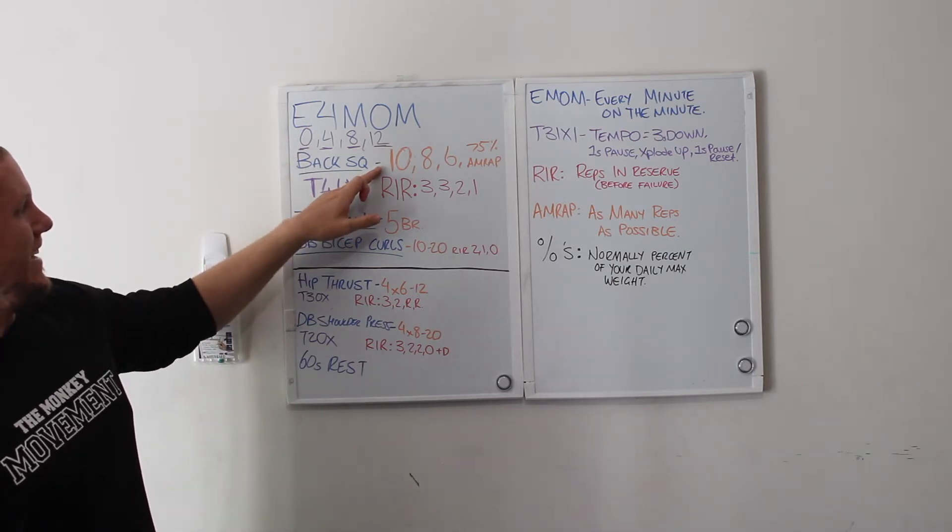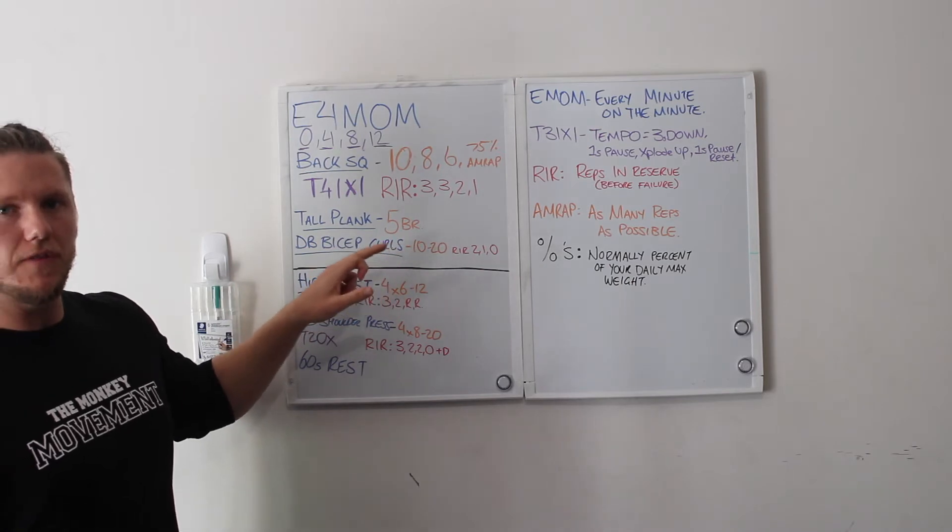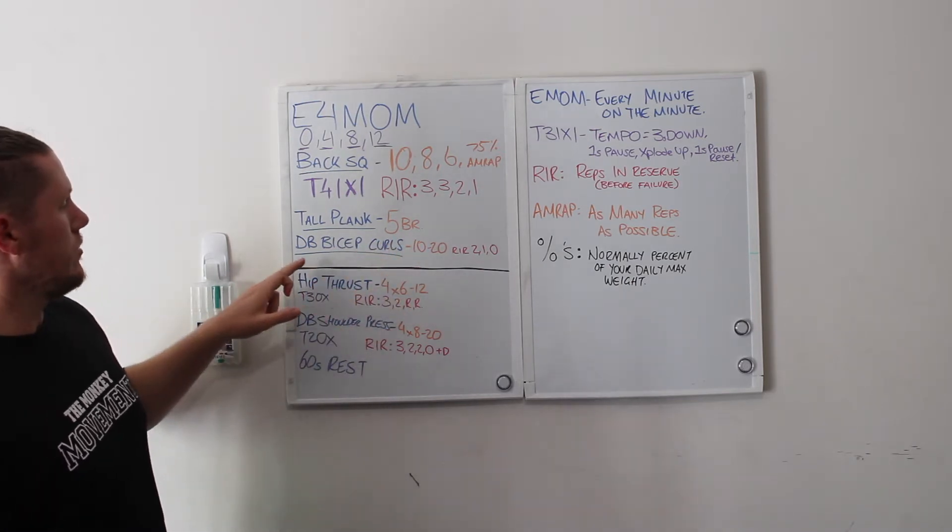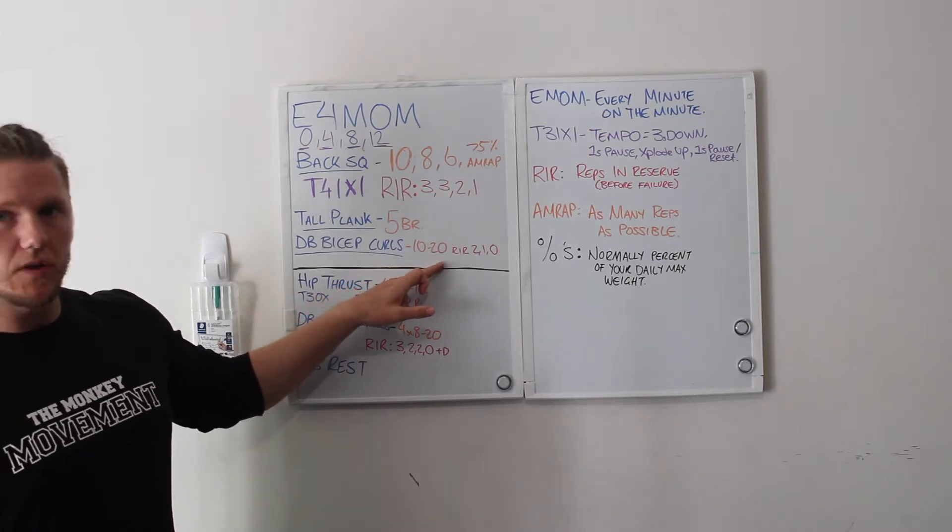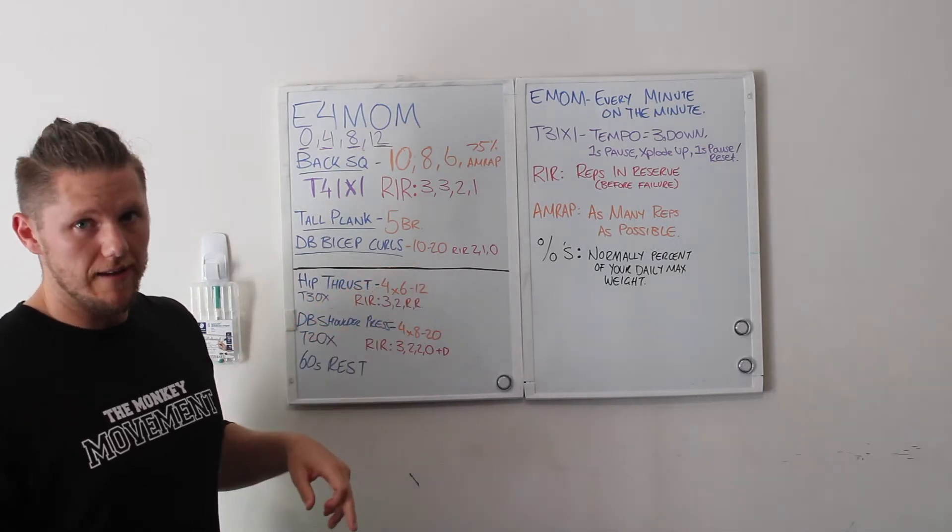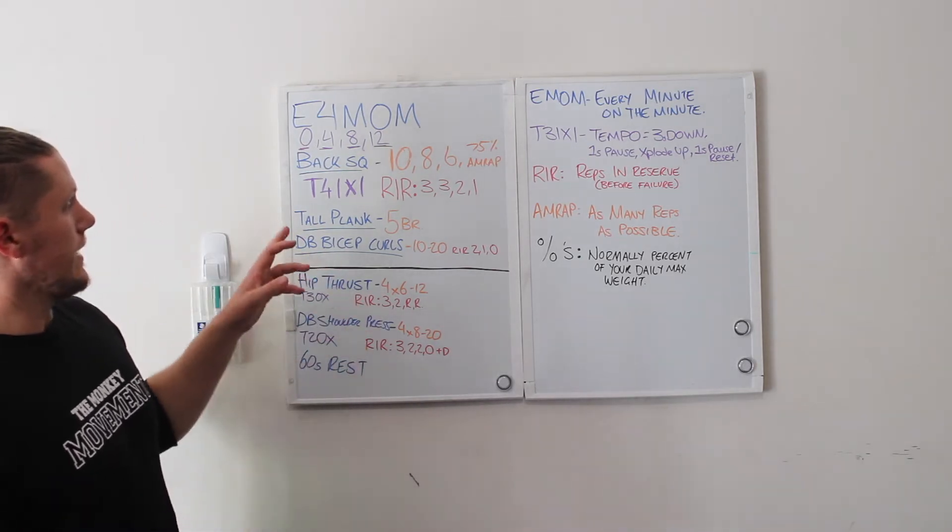We start the clock, do our set of ten, then do a tall plank. 5BR means five breaths. Then you would come and do your dumbbell bicep curls, ten to twenty reps. If you can't do ten, it's too heavy. If you can do twenty and you're still cruising, it's probably too light.